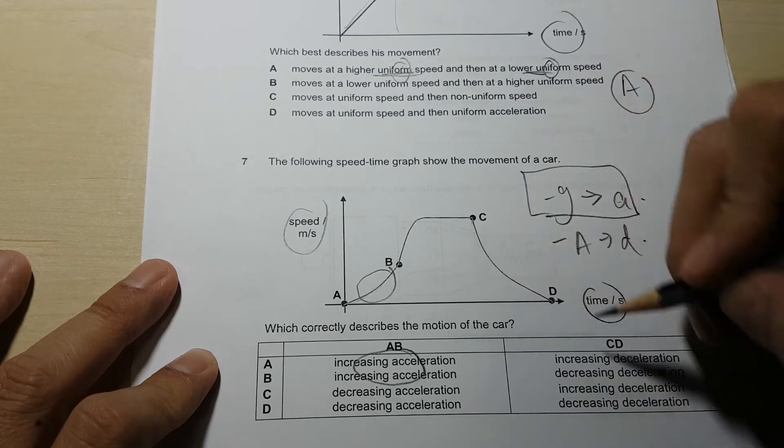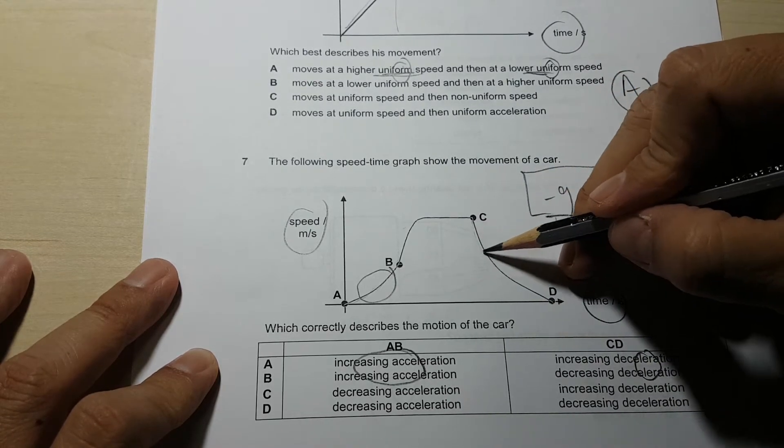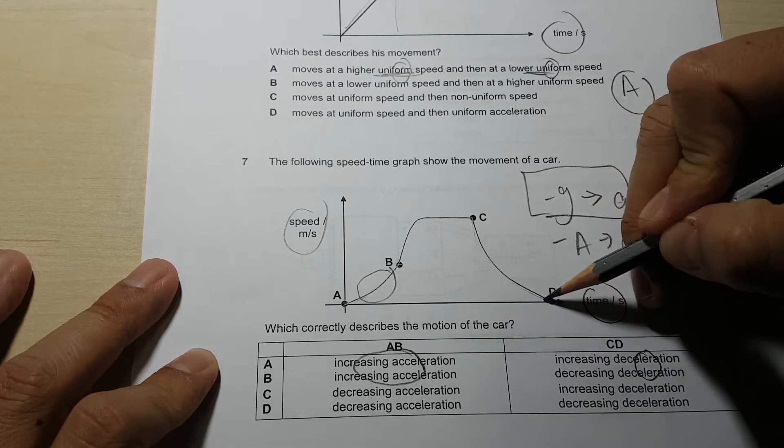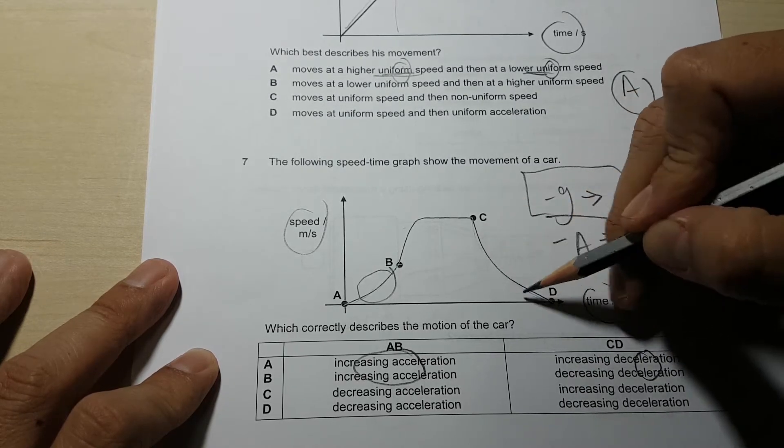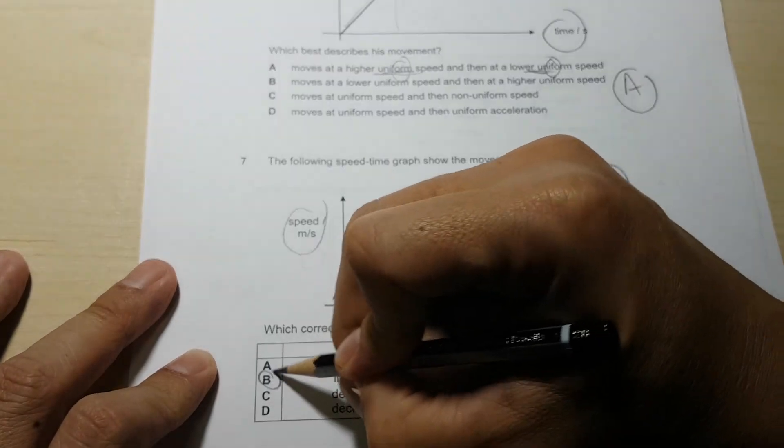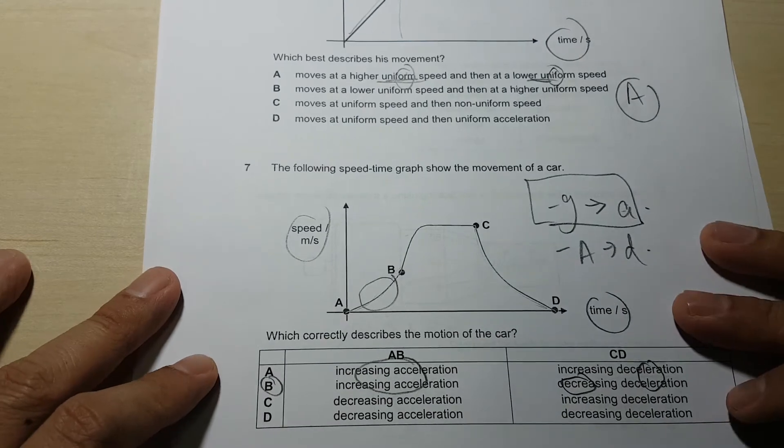So this one is deceleration. Both are deceleration, correct? But what can you say about the gradient? Increasing or decreasing? So it's becoming more gentle. Steep to gentle, so decreasing, so must be decreasing. So 7 will be B.